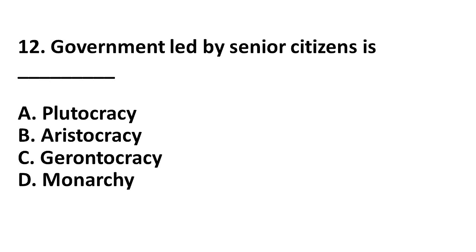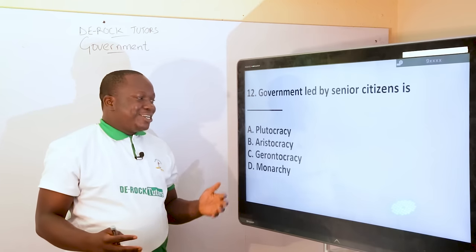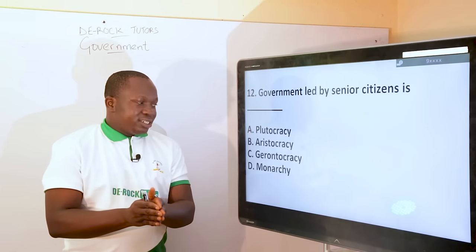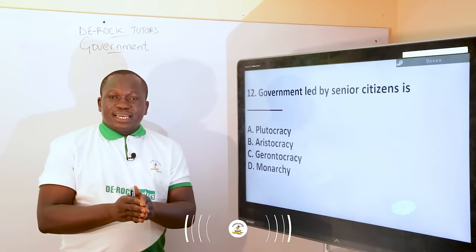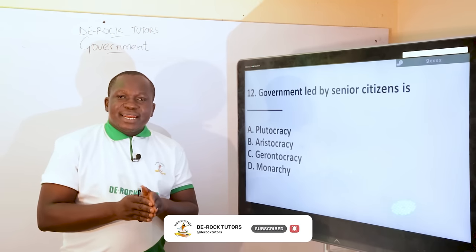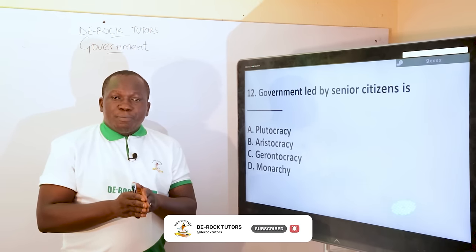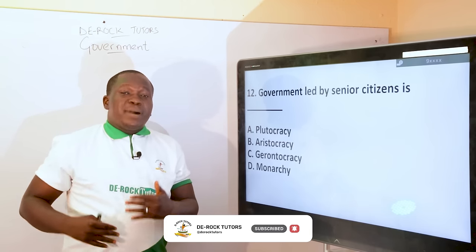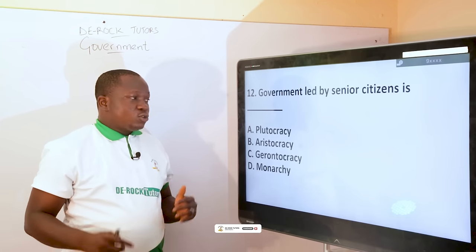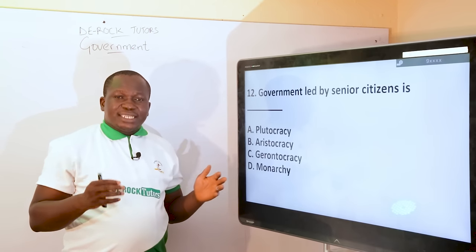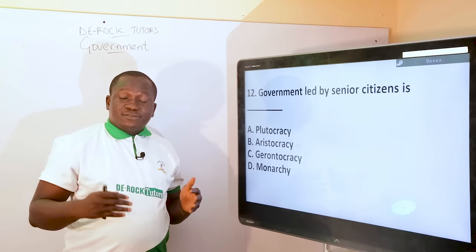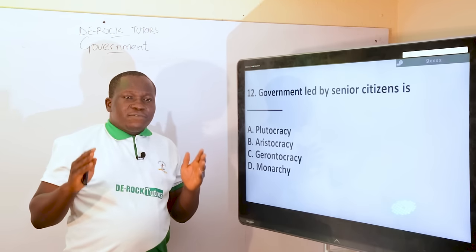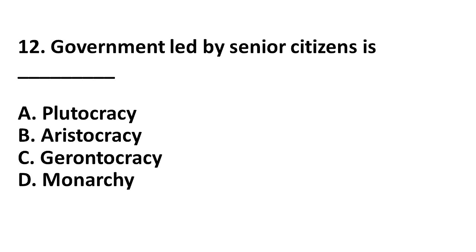Question 12: government led by senior citizens. The answer is gerontocracy. It won't be plutocracy — plutocracy is government led by few wealthy persons. Aristocracy is government led by few educated or few nobles. Monarchy is government led by a monarch who could be absolute or constitutional, where power is hereditary or by succession. The only answer left is gerontocracy, which refers to government led by a few elderly persons, few senior citizens, few old persons. The correct answer is C.